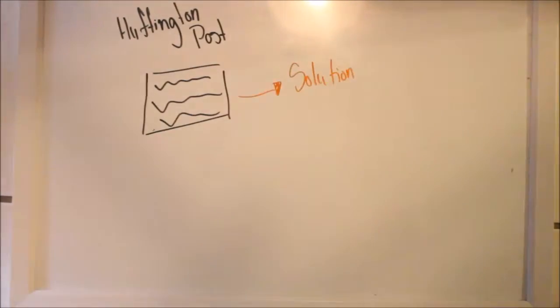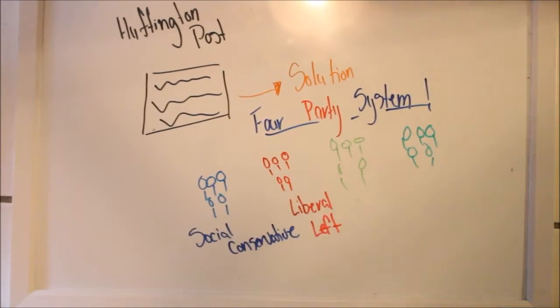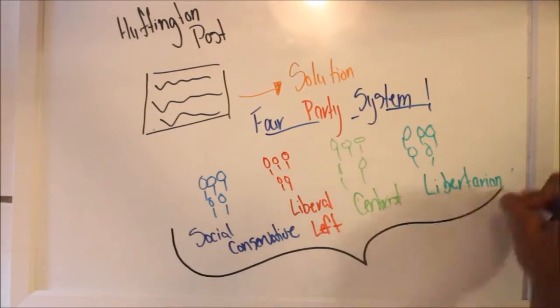According to the Huffington Post, one alternative to the two-party system lies in the idea of a four-party system. This idea would be inclusive of a social conservative party, a liberal left party, a centrist party, and a libertarian party.